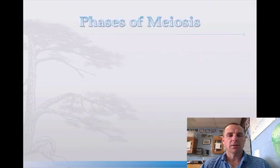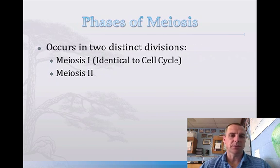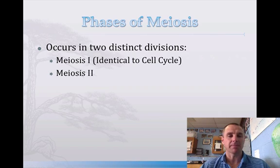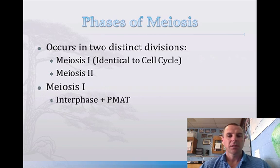The phases of meiosis — you already know them from mitosis. They basically occur in two divisions. Meiosis 1 is identical to the cell cycle: IPMAT — interphase, prophase, metaphase, anaphase, telophase. And meiosis 2 eliminates the interphase and just does the PMAT part.